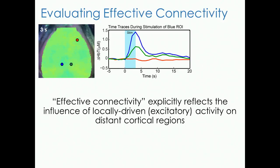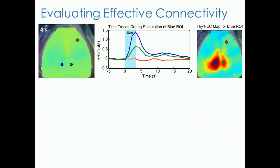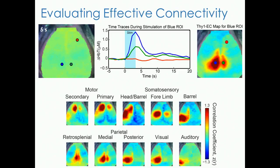We evaluate cell-specific effective connectivity — explicitly the influence of locally-driven excitatory activity over the rest of our field of view. When you stimulate where the blue dot is, you see very local activity but also activity on the other side of the brain. Taking this evoked time course of the blue seed over a 25-second window and correlating with other time courses generates a cell-specific functional connectivity map based on the Thy1 cell population. We can generate these maps with single stimulus presentations in single awake, behaving mice, revealing rich connectivity structure with distinct islands of activity in motor and somatosensory cortex, some bilaterally and some unilaterally distributed.